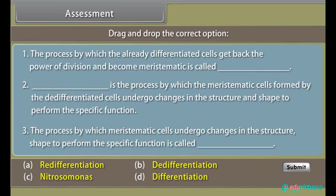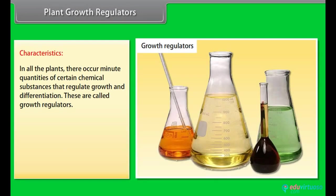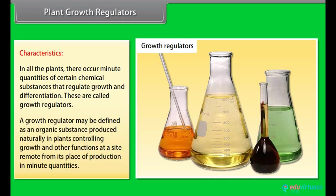Assessment. Before proceeding further, let us know how much you have learnt. Plant growth regulators. Characteristics. In all the plants, there occurs minute quantities of certain chemical substances that regulate growth and differentiation. These are called growth regulators. A growth regulator may be defined as an organic substance produced naturally in plants controlling growth and other functions at a site remote from its place of production in minute quantities.